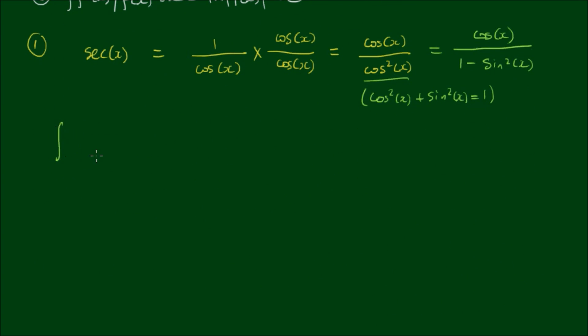So now the integral becomes the integral of cos x over 1 minus sin squared x with respect to x. And to show a bit of clarity for the preceding steps, I want to write this dx next to the cos x up here. Now to make this even simpler, let u equal sin x. Then if we take the derivative of this, we can say that du is equal to cos x dx.